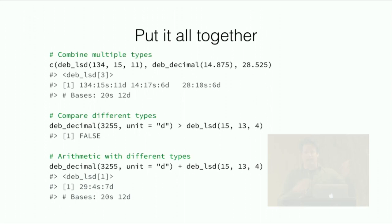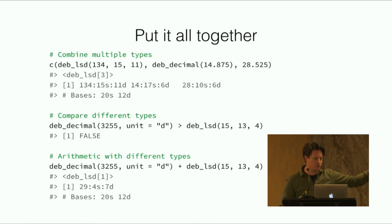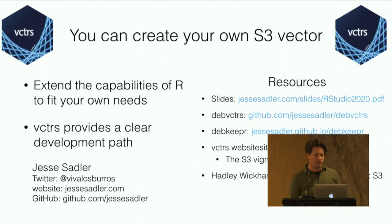How do we put it all together? This is essentially the endpoint. I'm just showing what you can get. We can combine deb_lsd, deb_decimal and double and we get deb_lsd. We can compare different types - so 3,255 pence is less than 15 pounds. If you go on you can do arithmetic including arithmetic with different types. What I want to say is that you can create your own S3 vectors, you can extend the capabilities of R to fit your own needs, and vectors provides this clear developmental path that enables you to do this. Thank you.